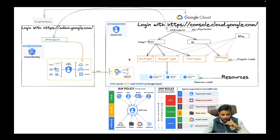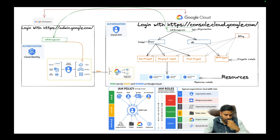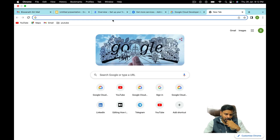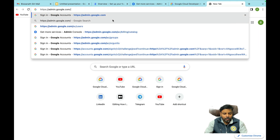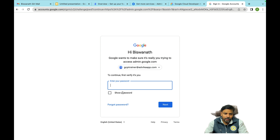If you're clear on how Google Workspace and Google Cloud Platform sync with each other, then you'll have a much clearer idea of how everything works. Now I'll show you the demo. This is the Google Workspace URL — let me log in.